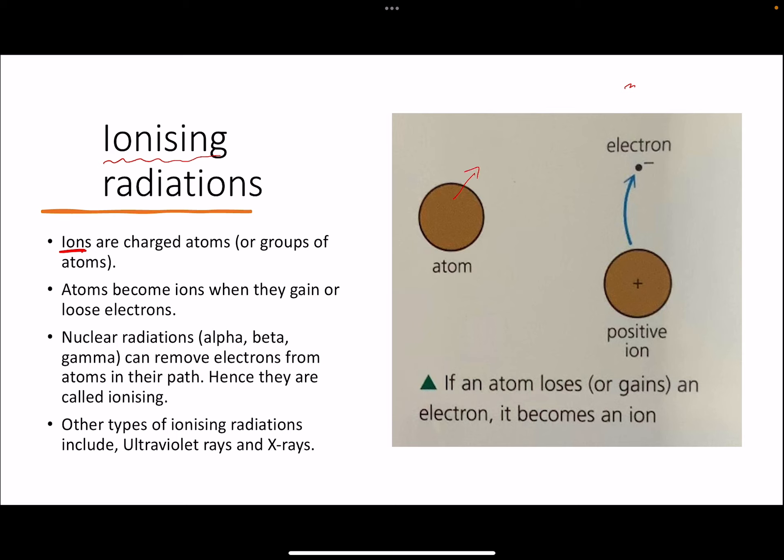An atom is neutral because it has equal number of protons and equal number of electrons, therefore it will have no charge on it overall. The charge will cancel out. But if an atom loses an electron, then it will be left with a positive charge. And if it gains an electron, obviously then it will become negatively charged.